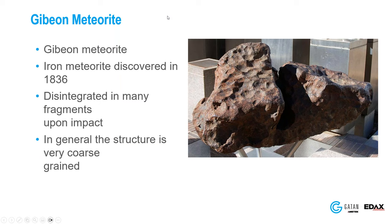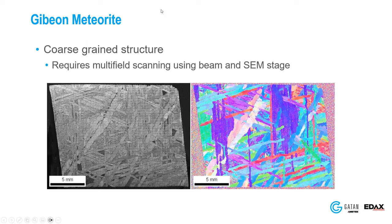Here's an example from the Gibeon meteorite, discovered in 1836. It's a very coarse-grained material. This EBSD map is constructed from many fields stitched together to capture the microstructure. You can see stringers of data in a lamellar microstructure — actually two different phases.